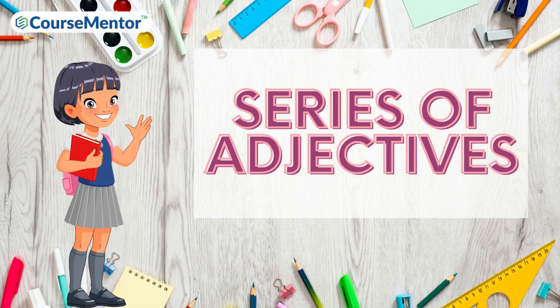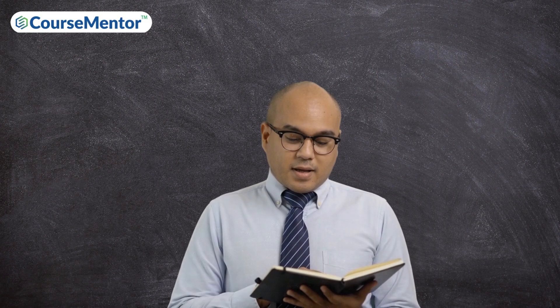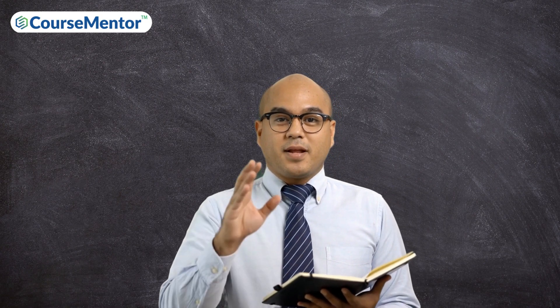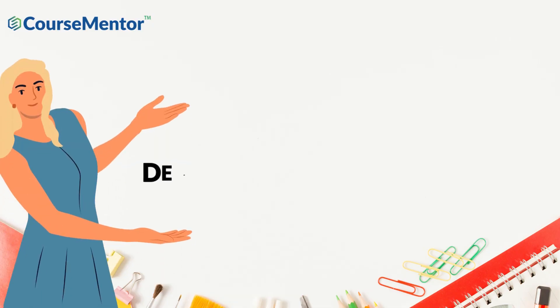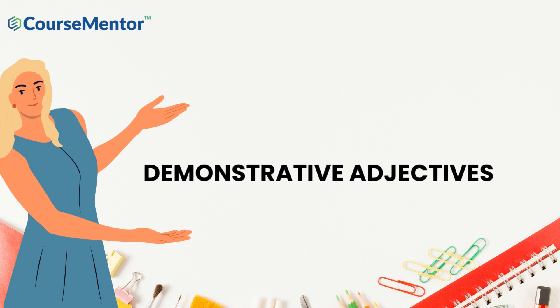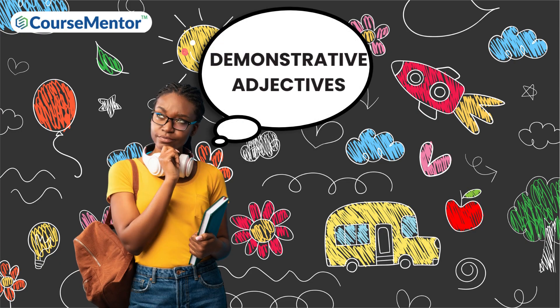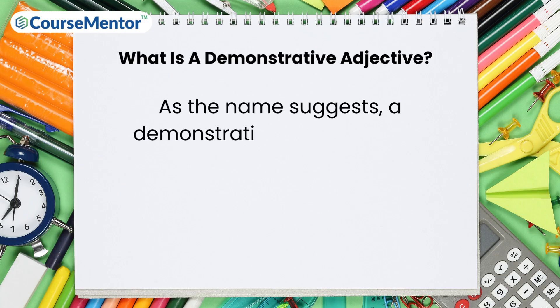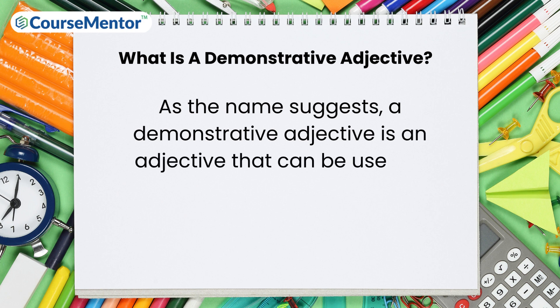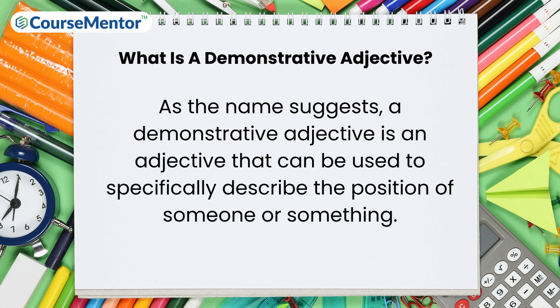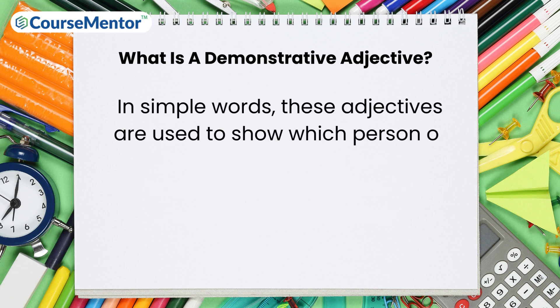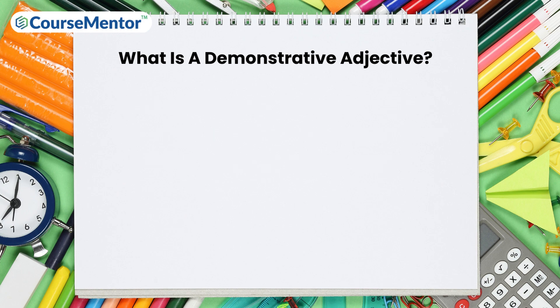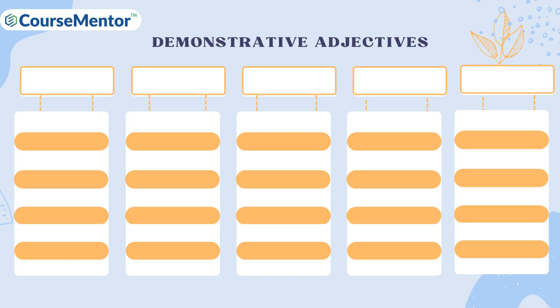Welcome students to the series of adjectives. Have you heard of demonstrative adjectives? Do you have any idea what they are and how they are used? Let us find out. A demonstrative adjective is an adjective that can be used to specifically describe the position of someone or something. In simple words, these adjectives are used to show which person or thing is being talked about. Look at the table to understand demonstrative adjectives effectively.